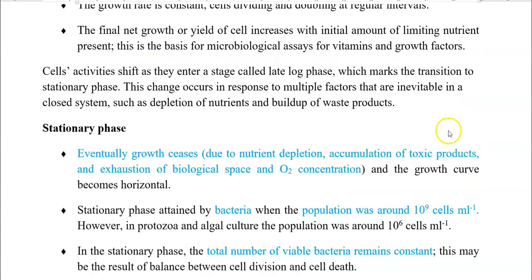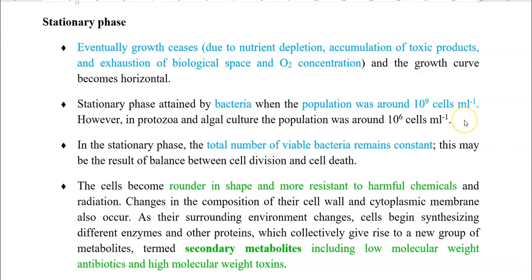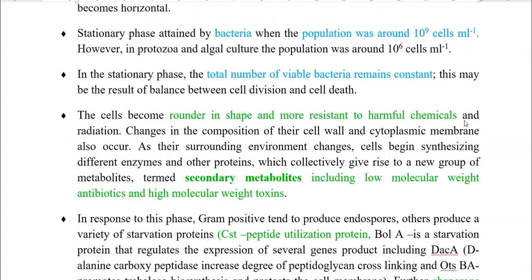The next phase is the stationary phase, in which growth ceases mainly due to depletion of nutrients, accumulation of toxic products, and exhaustion of biological space. There is no space available for cells to multiply, and oxygen concentration also lowers. The growth curve appears horizontal during this phase. Bacteria reach the stationary phase when the population in the closed vessel is around 10⁹ cells per ml, while protozoa and algal cultures reach stationary phase at 10⁶ cells per ml. The total number of viable bacteria remains constant, due to a balance between cell division and cell death.